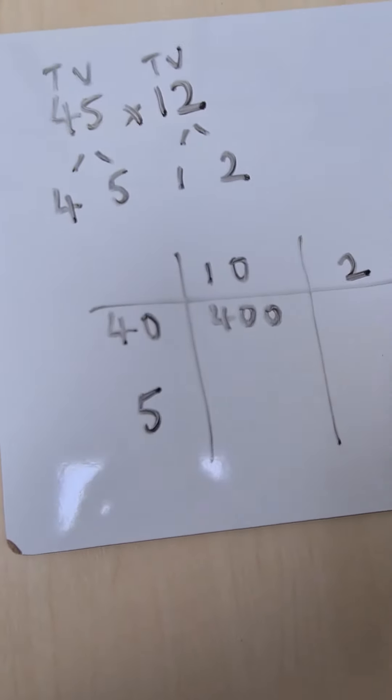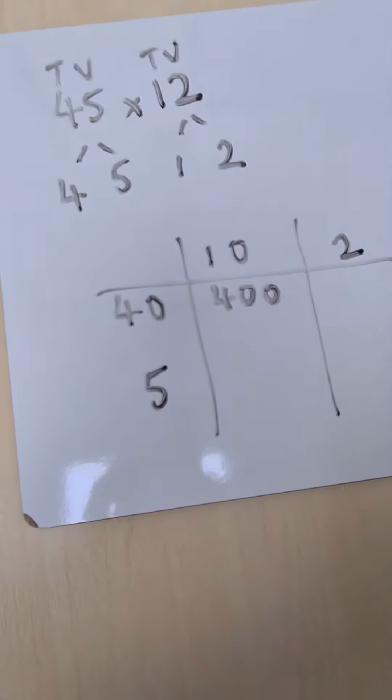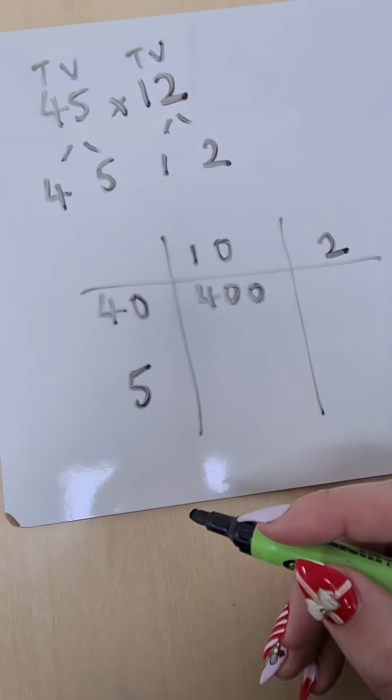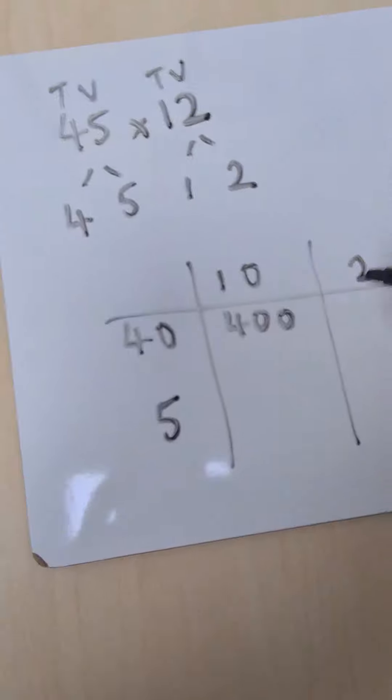40 times 2. Some children may know this in their head. Some of them might need to take 4 times 2 and then multiply it by 10. We have 80.